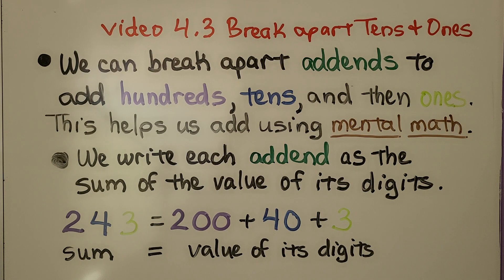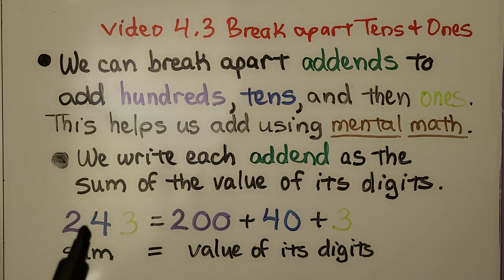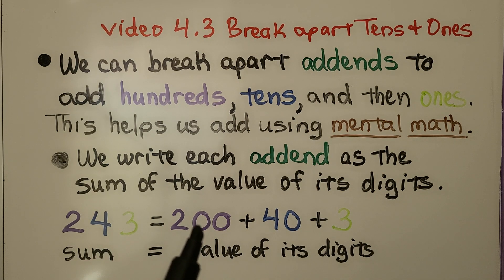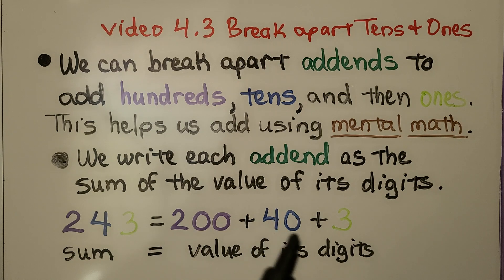We write each addend as the sum of the value of its digits. So for 243, that's 200 plus 40 plus 3.